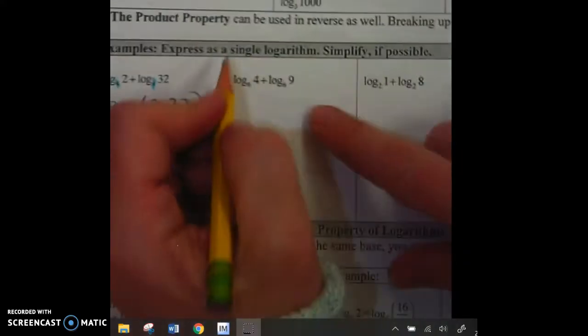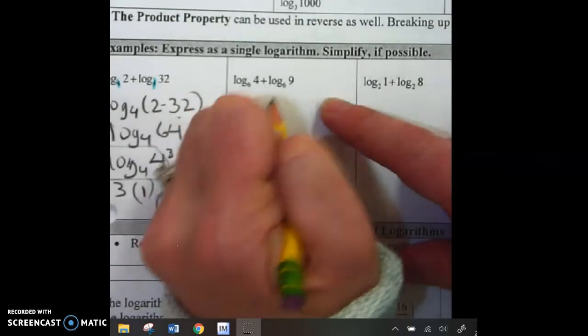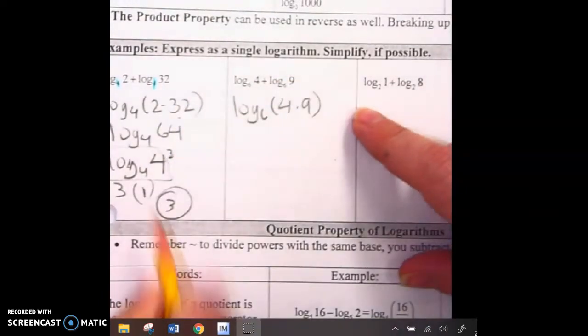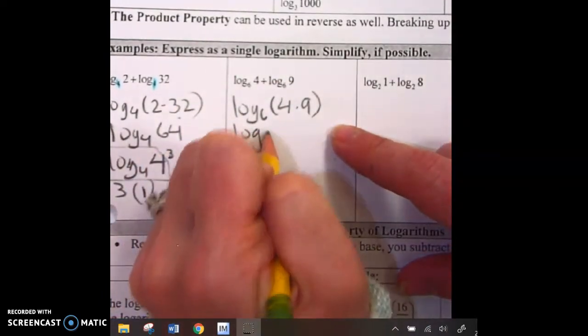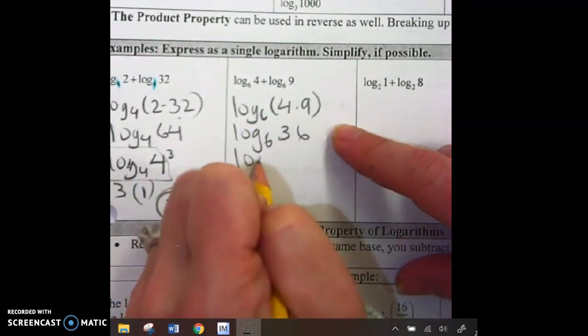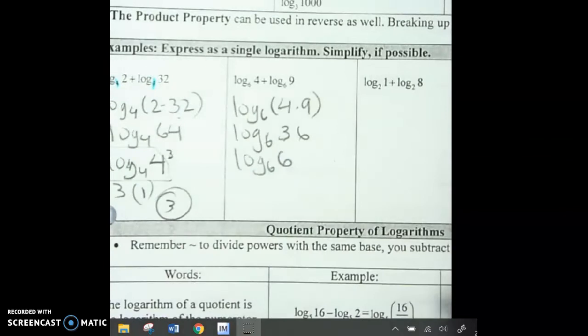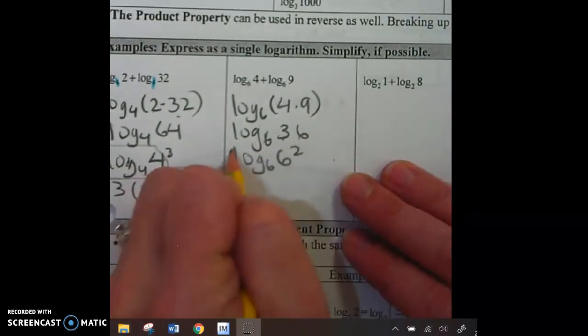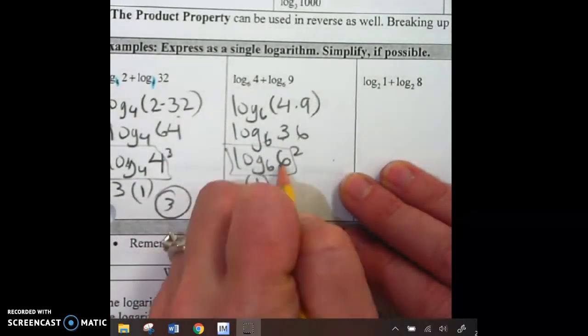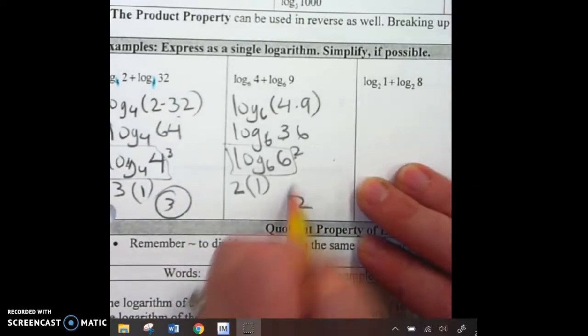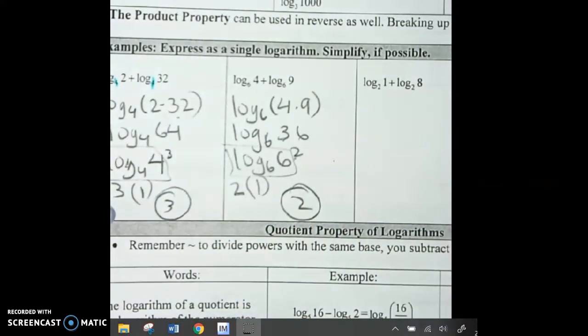And now, this is just like the previous page. Log base 4. So what do I want that to be? 4. 4 to the what is 64? 3. All of that turns into 1. Little turns big. 3 times 1 is 3. Let's do the next one. Anytime I add, it means I multiply. Log 6, 36. As soon as I have it as 1 log, what do I want? I want that to be a 6. 6 to the what is 36? 6 squared. This is the same. 1. Little turns big. Done.